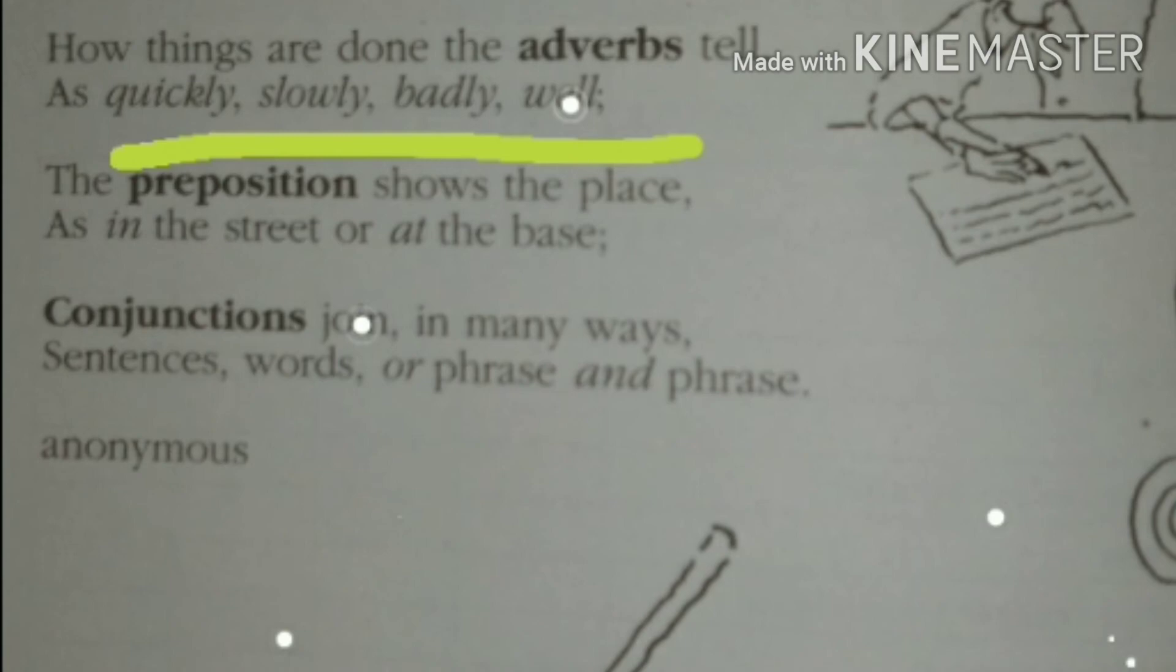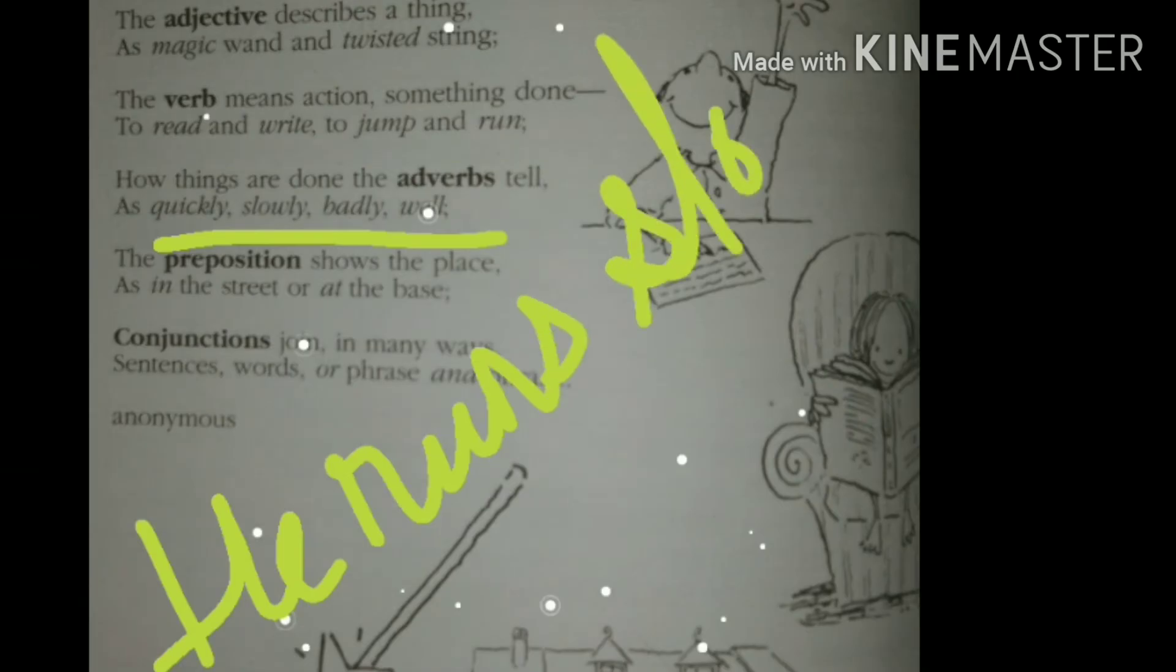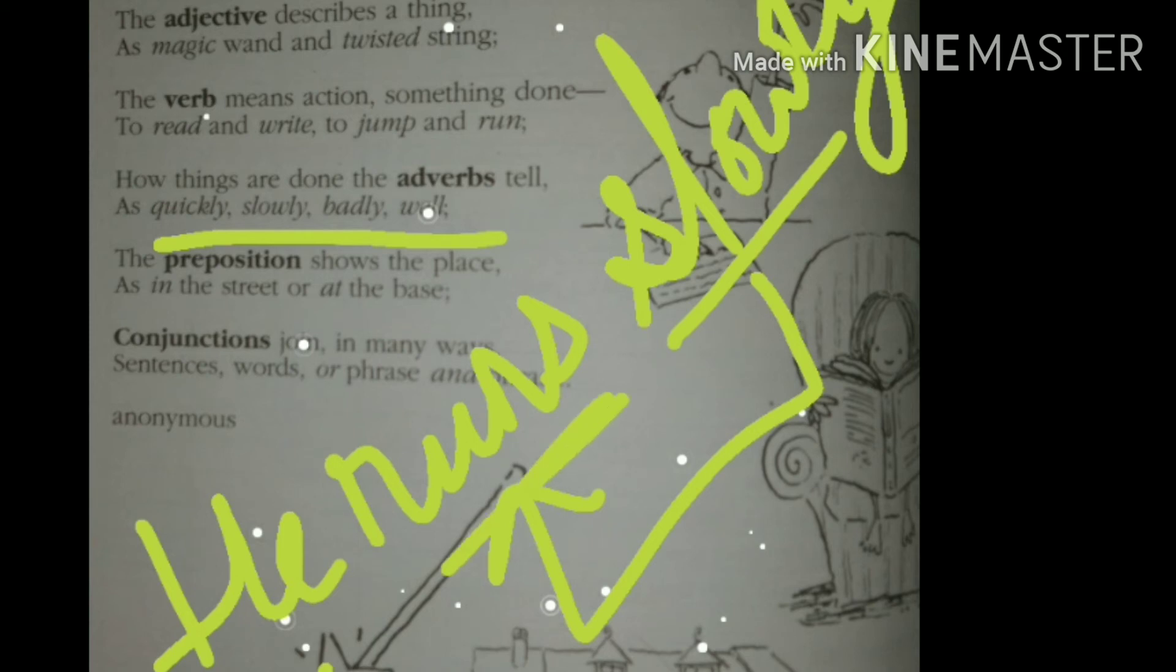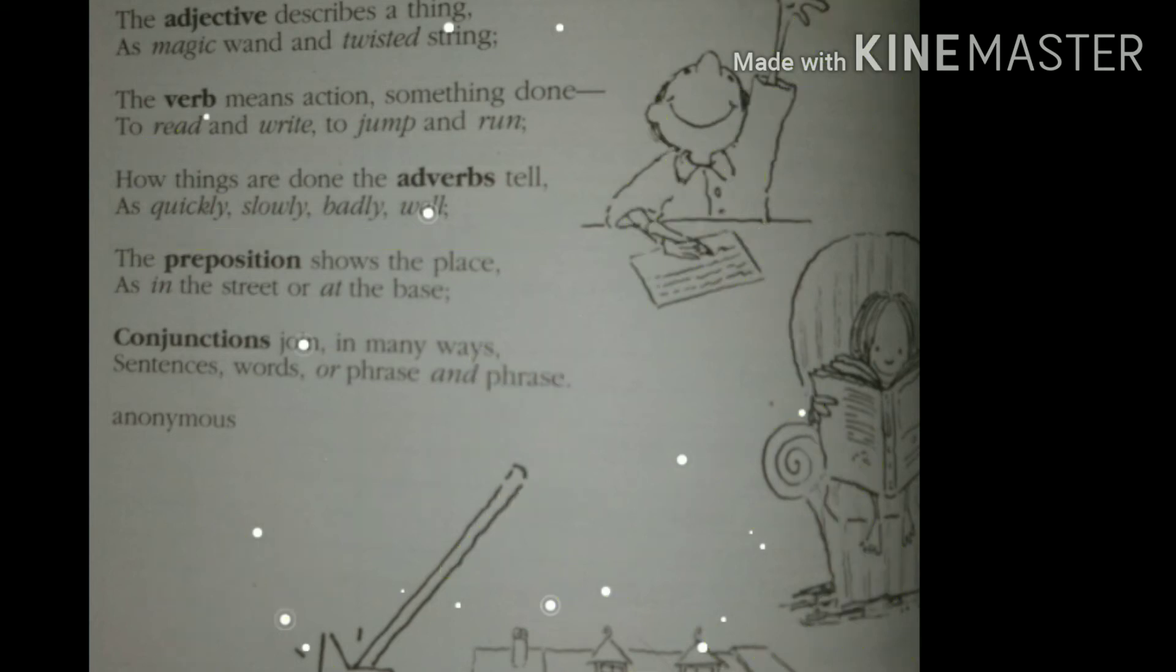We can take an example. He runs slowly. So here slowly, what is it explaining? The action he did, that is running. And how this running is done? What tells the how, that is adverb. How is he running? Slowly. He runs slowly. So here the word slowly is an adverb as it adds to the meaning of the verb. It explains about the verb.